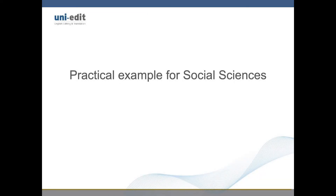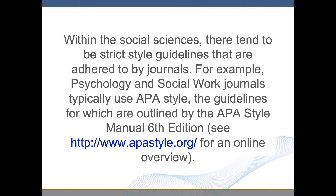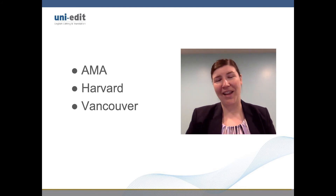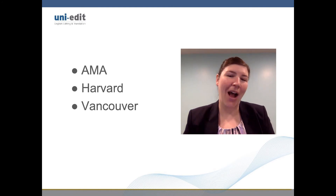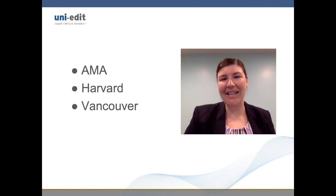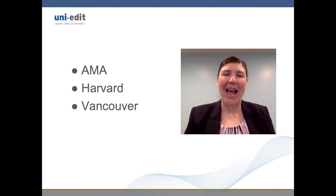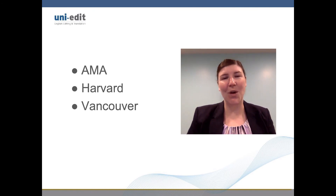Within the social sciences, there tend to be strict style guidelines that are adhered to by the journals. For example, Psychology and Social Work journals typically use APA style, the guidelines for which are outlined by the APA style manual, 6th edition. Other popular styles are AMA, Harvard, and Vancouver. While APA is most common, it is advisable to check the guidelines for the individual journal to check for style specifications, as some journals have specific individual formatting requirements.